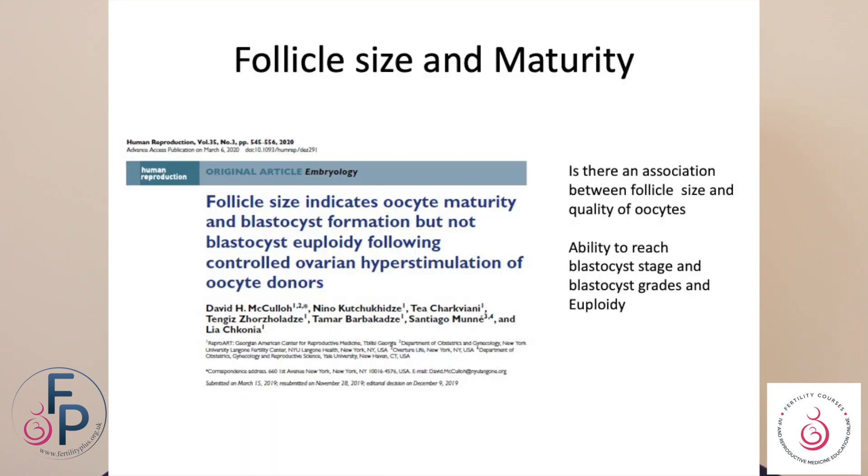This is a paper published in Human Reproduction in 2020. What we are trying to see is whether there is an association between follicle size and oocyte quality, and also whether there is an association between follicle size and the ability to reach a blastocyst stage and whether you can predict euploid status.